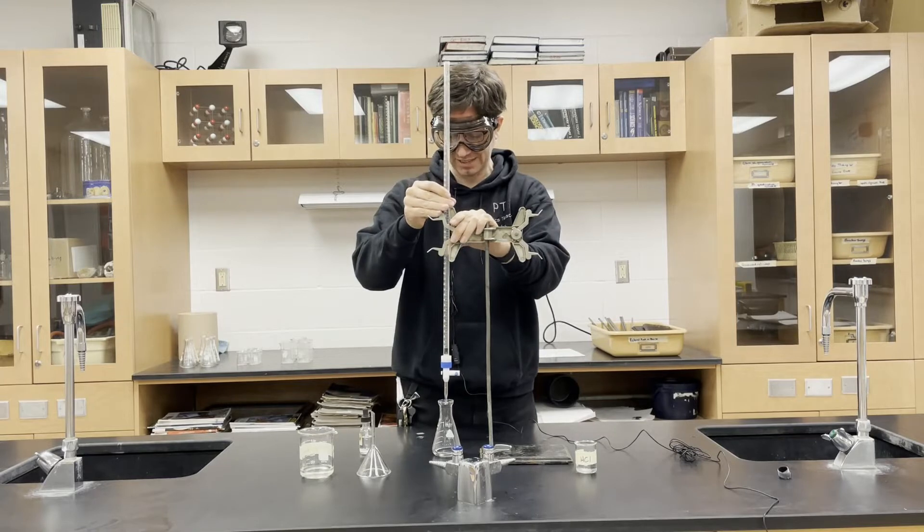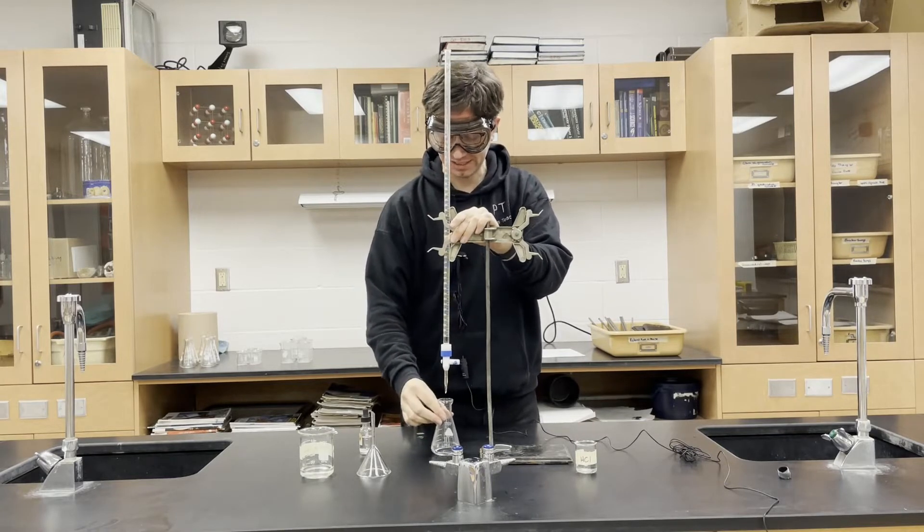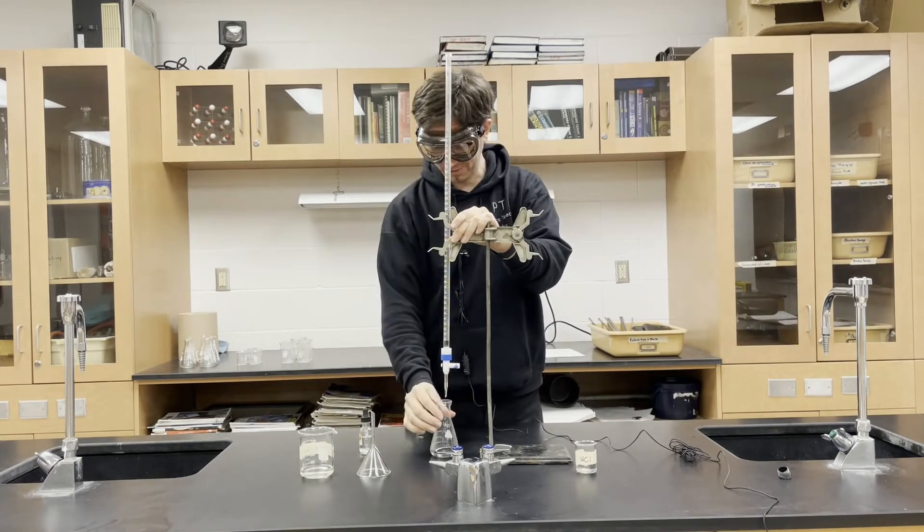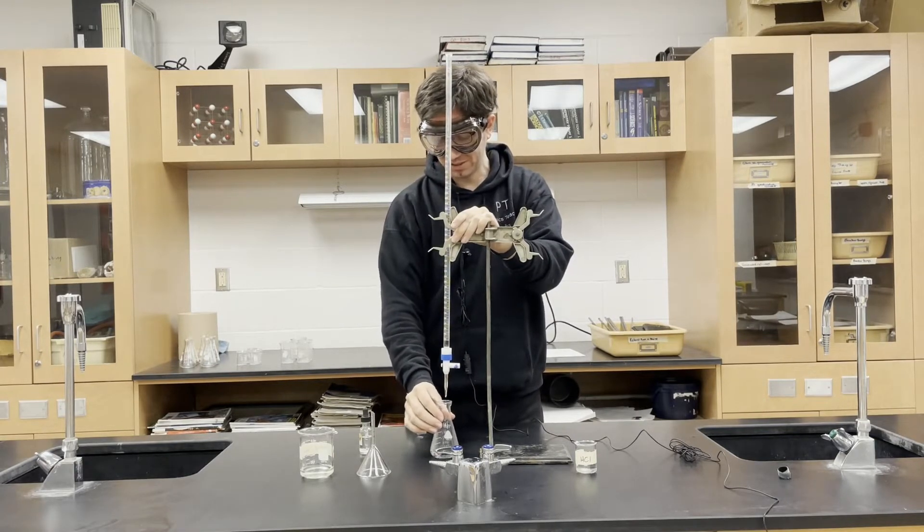Now I'll move it back up so that it is just above the flask. I don't want it in the flask because I'm going to be swirling and I don't want to chip off the end of the burette. So I want it just above but where it's not going to hit.